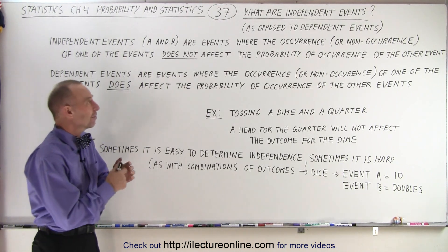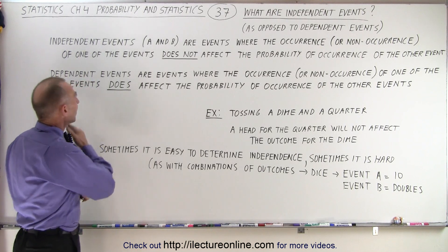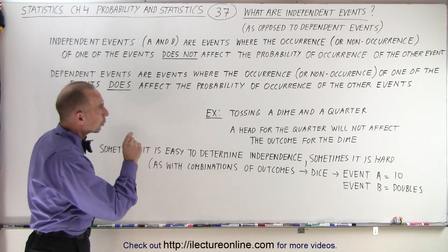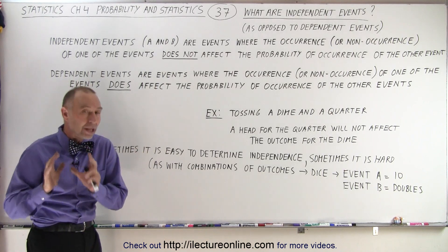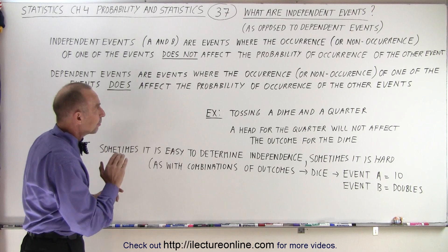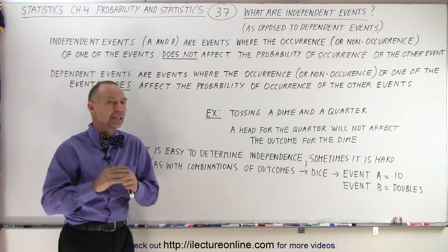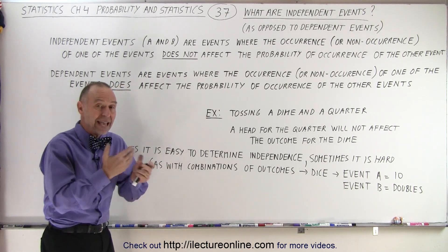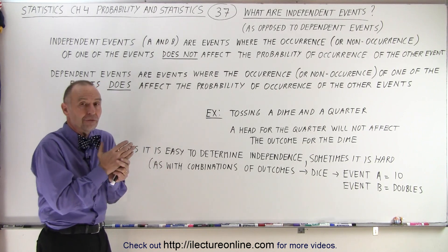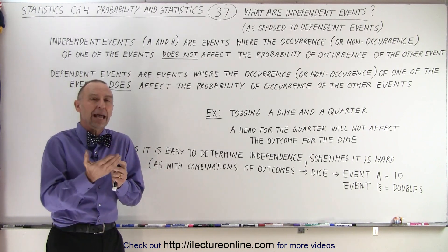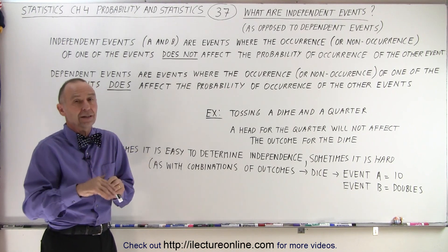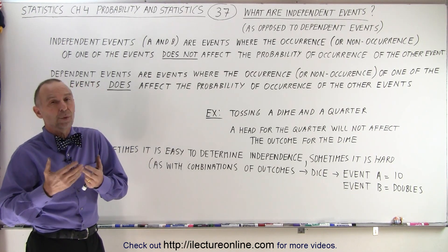So what's the definition? Independent events — let's say A and B — are events where the occurrence or non-occurrence of one of the events does not affect the probability of occurrence of the other event. So if A happens or doesn't happen, it shouldn't affect whether B will happen or not happen. In other words, the probability of B happening will not be affected by whatever happens with A.